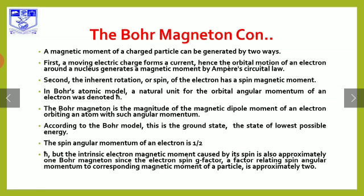The spin angular momentum of an electron is 1/2 h-bar. The atomic electron magnetic moment caused by its spin is approximately 1 Bohr magnetron, since the electron spin g-factor — a factor relating spin angular momentum to the corresponding magnetic moment — is approximately 2.